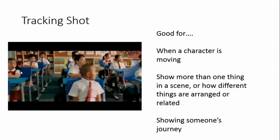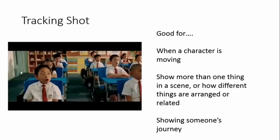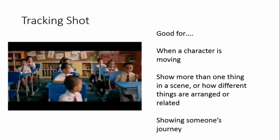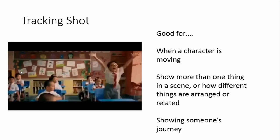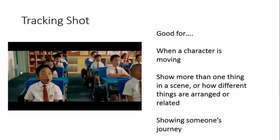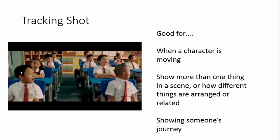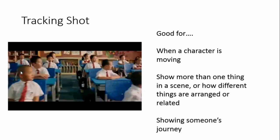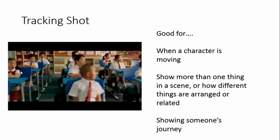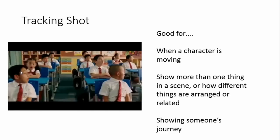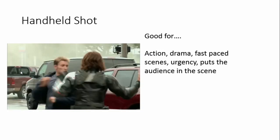A tracking shot is where your camera is on wheels or a track and moves across or through a room or location — in a straight line or more freely. Tracking shots are good for following people or movements, showing someone's journey, and allowing us to see more than one thing in a scene — for example, school children at their desks, then what they're looking at, then a character's reaction. If the shot follows a character, it shows their importance.